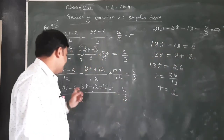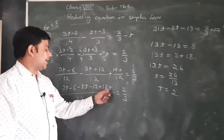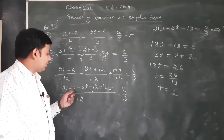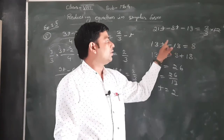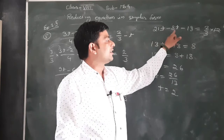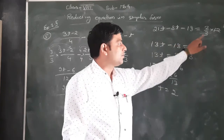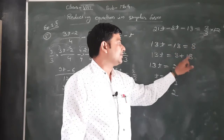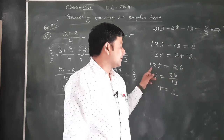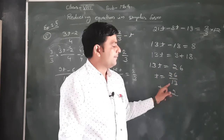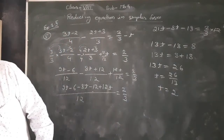9t और 12t को add करते हैं: 21t। Minus 6 और minus 12: minus 18। As it is लिख दिया। Solve करते हैं: 21t में से 8t subtract करेंगे, 13t बचेगा। Minus 18 equals to 8। Minus 18 transpose होकर plus 18 हो जाएगा। 18 + 8 = 26 आएगा। 13 multiply में divide में जाएगा, और 26/13 = 2। Solution: t = 2. That is question number 5.